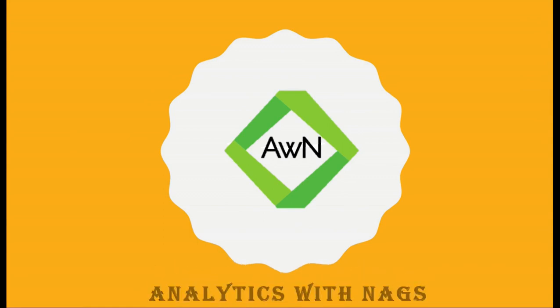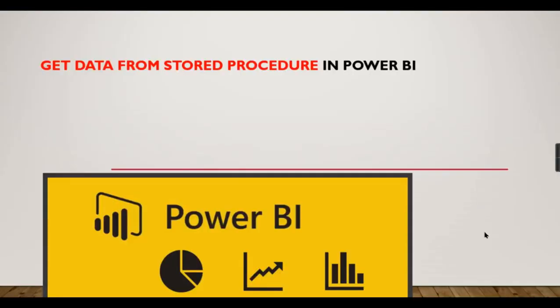Welcome to Analytics with Naxx video. We're going to see how to get the data from a stored procedure into Power BI. You may have a database where data is fetched only if you pass some parameters or run a procedure. That may be a standard procedure in some organizations. Without a parameter, your job is very simple — just give the procedure name. If it has a parameter, it requires a little bit of code and some tricks.